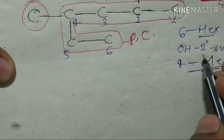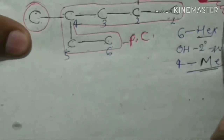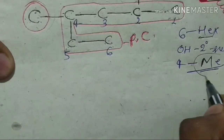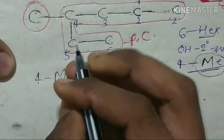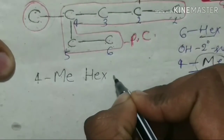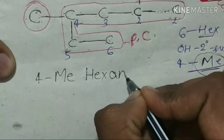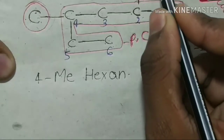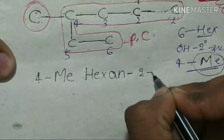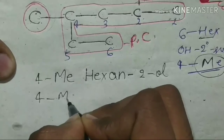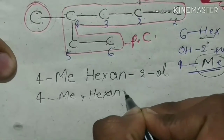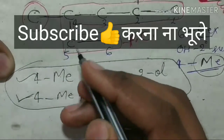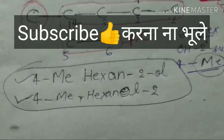In alphabetical order, H comes before M, but we keep alphabetical order here. The substituent is at position 4 — it is a methyl group, so we write '4-methyl'. The six carbon chain is 'hex', and since we add a secondary suffix starting with a vowel we drop the final 'e' from hexane. The final name is 4-methylhexan-2-ol.